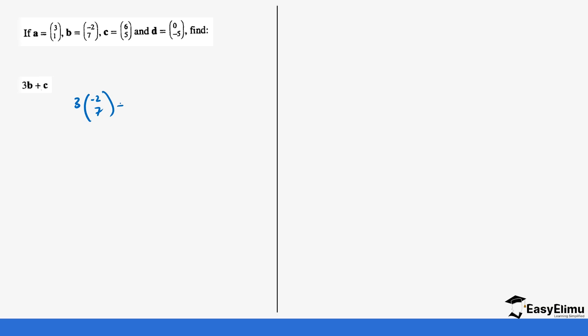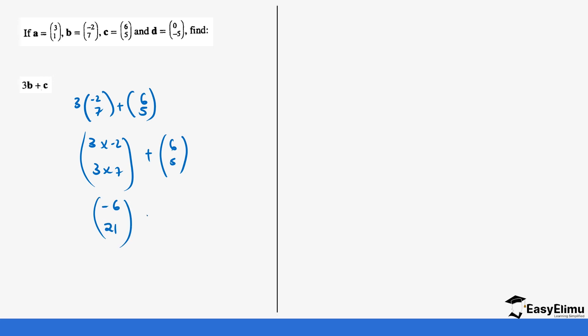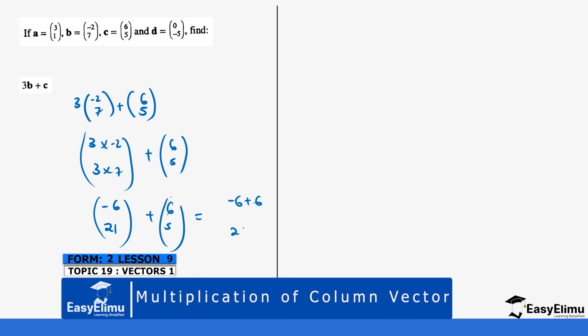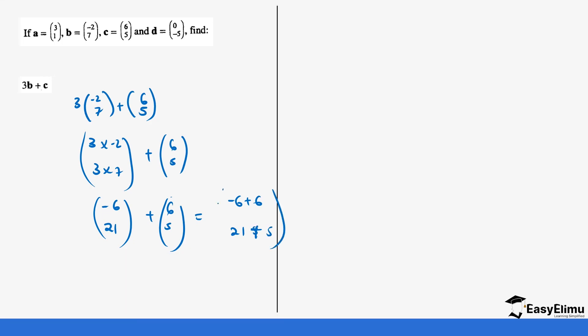Finally, we have a=(3,1), b=(-2,7), c=(6,5), and d=(0,5). Find 3b plus c. So 3 times (-2, 7) plus (6, 5). This is the same as 3×(-2)=-6, 3×7=21, then plus (6, 5). So we get (-6+6) and (21+5), which gives us (0, 26).